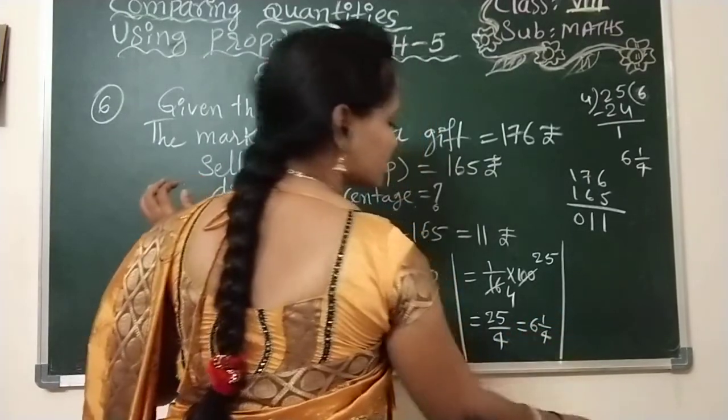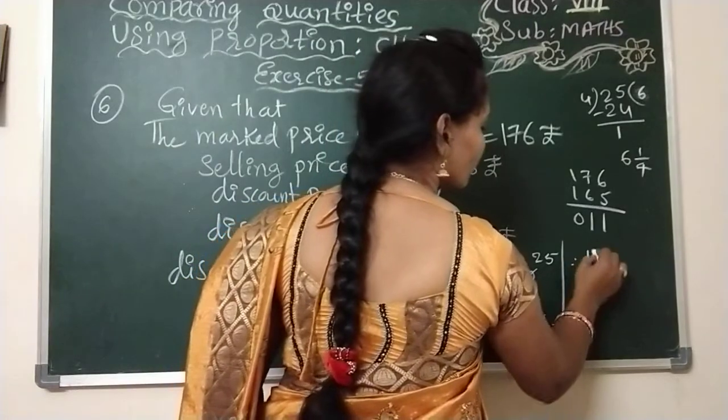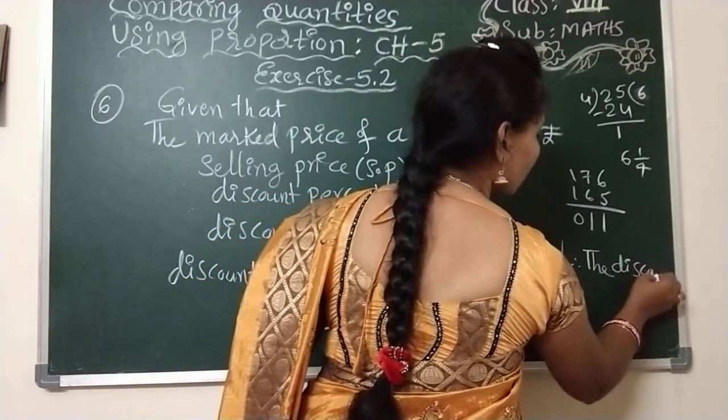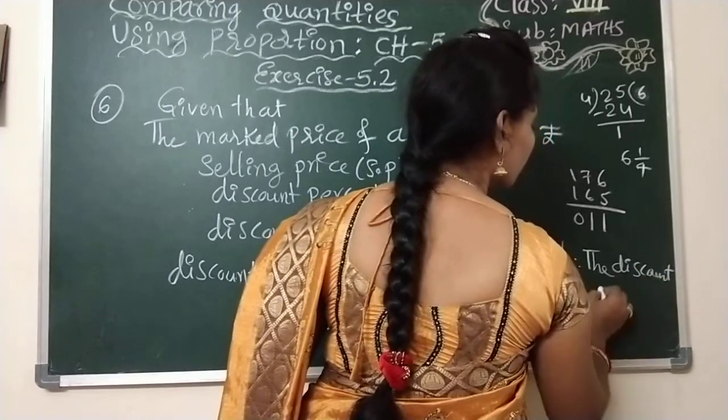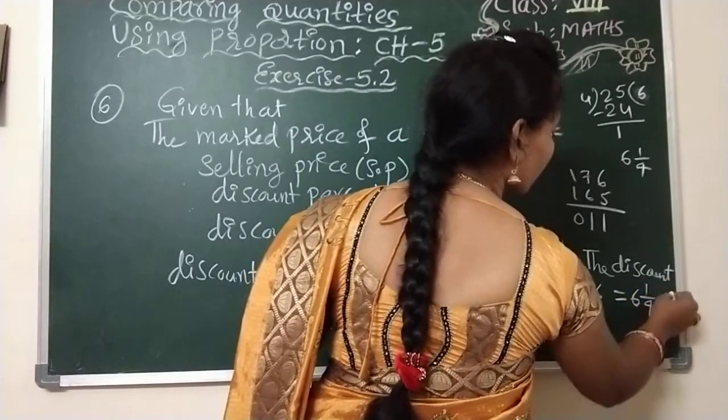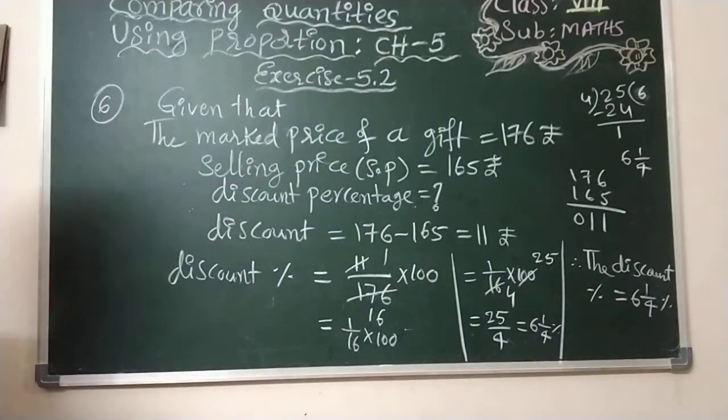What is the discount percent? Therefore, the discount percent is equal to 6 and 1 by 4 percent. Like this we can find out the discount percentage of that gift item.